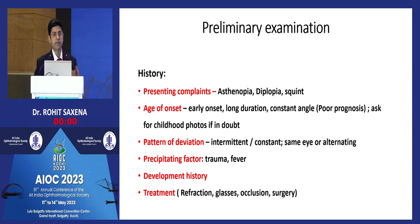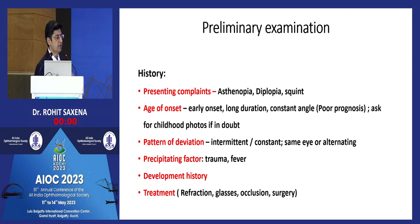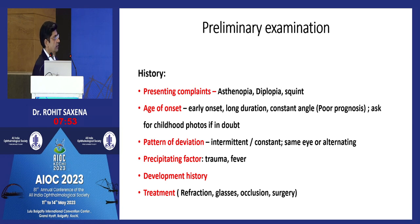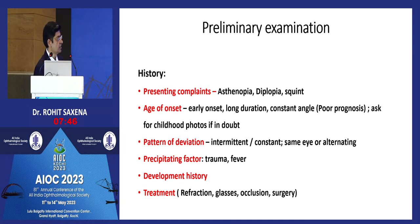The basic strabismus workup requires a fair amount of chair time and history. You need to know presenting complaints like asthenopia, diplopia, presence of strabismus, age of onset, duration, the pattern of deviation — whether it's intermittent, constant, which eye is deviating, whether there is alternation — precipitating factors, and any prior treatment.